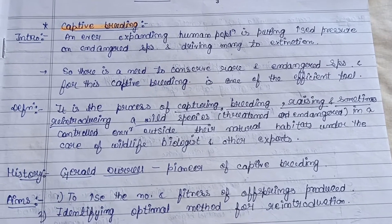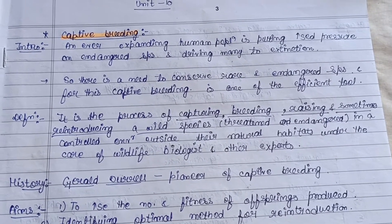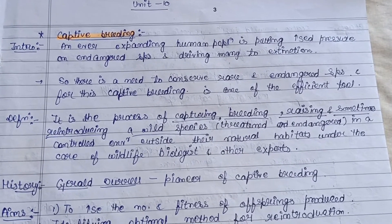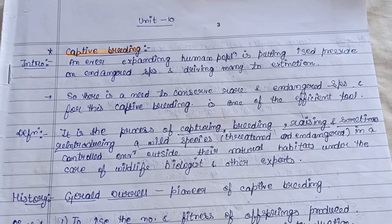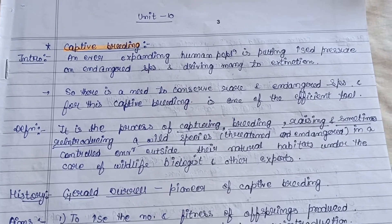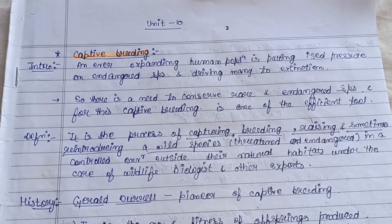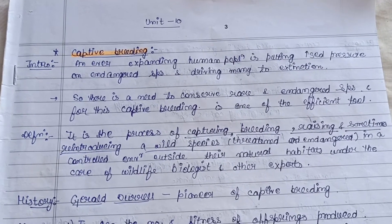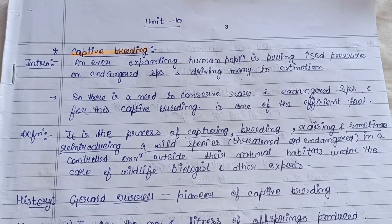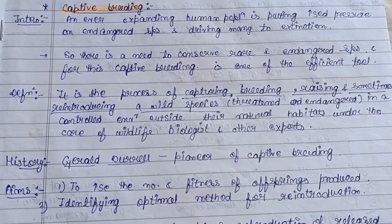Starting with captive breeding, an ever-expanding human population is putting increased pressure on endangered species and driving many to extinction. There is a need to conserve the rare and endangered species, and captive breeding is one of the most efficient tools. There is a continuous decline in threatened species, so captive breeding is one of the best conservation methods.